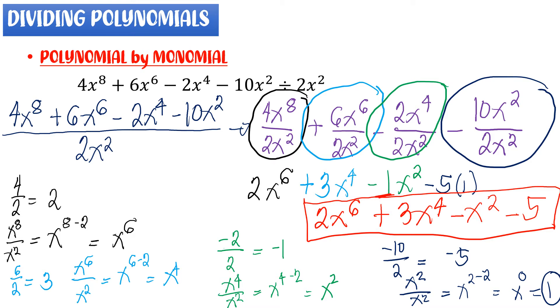So our final answer — the quotient — is 2x raised to 6 plus 3x raised to 4 minus x squared minus 5. That is how we divide a polynomial by a monomial.